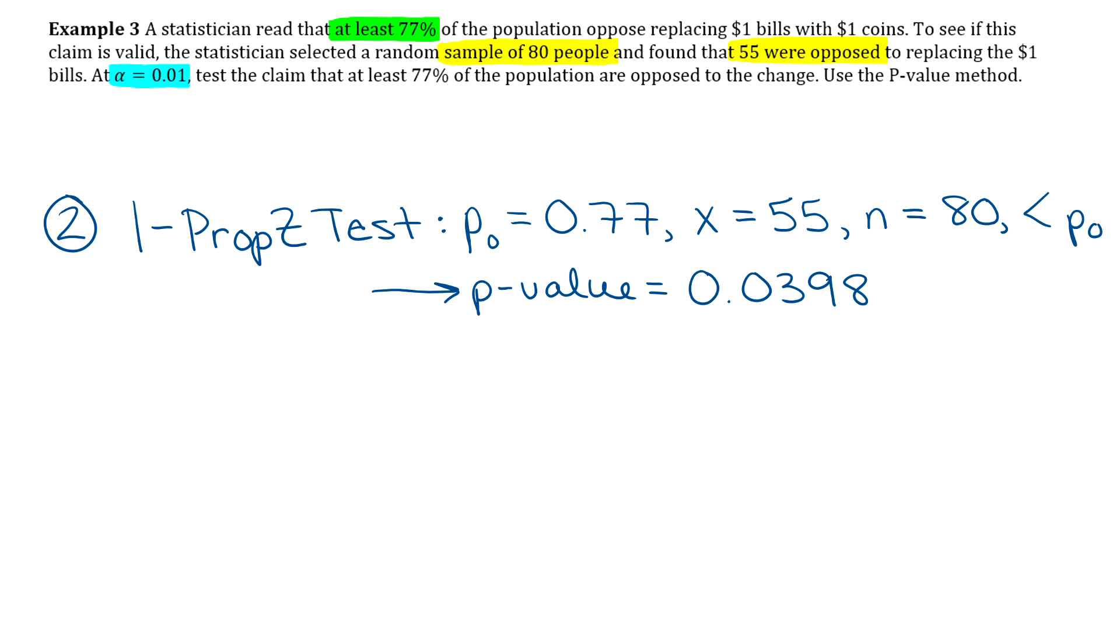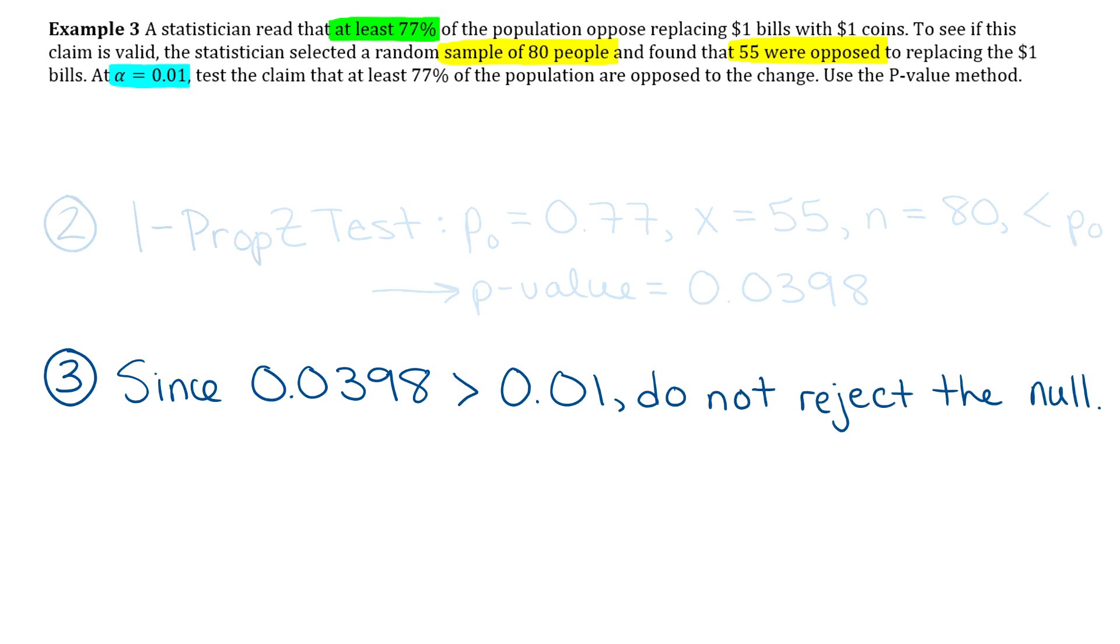So with the p value method, step three, once you have your p value, you need to compare that with your level of significance. So for step three, I'm going to say that since 0.0398, and then I want to compare it with 0.01. So 0.0398 is definitely greater than 0.01. And when p is greater than alpha, that means that we do not reject the null. Okay, so we didn't reject the null. The null is the claim. So we'll say for step four, our conclusion statement that there is not enough evidence to reject the claim.